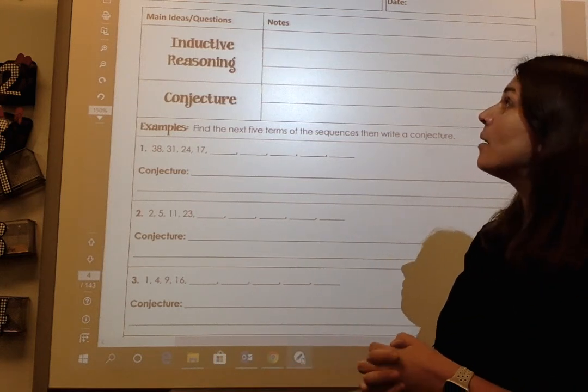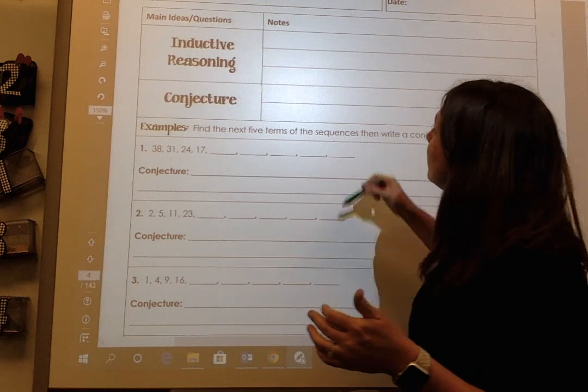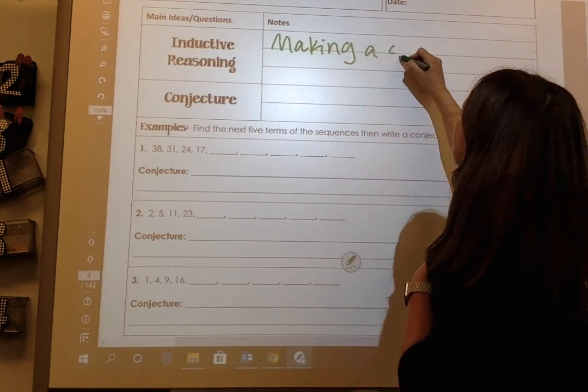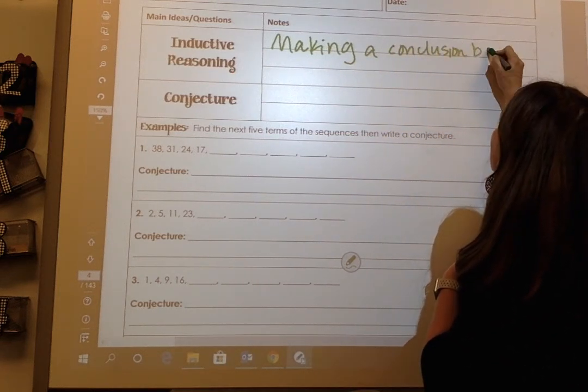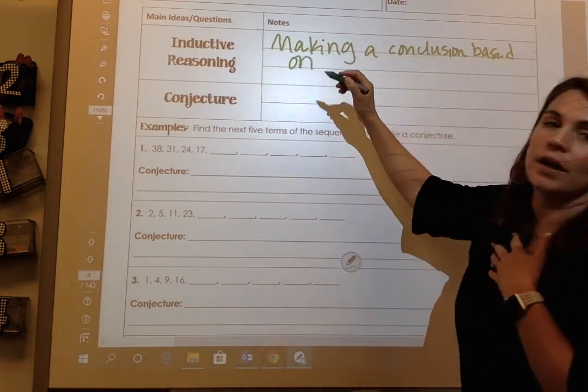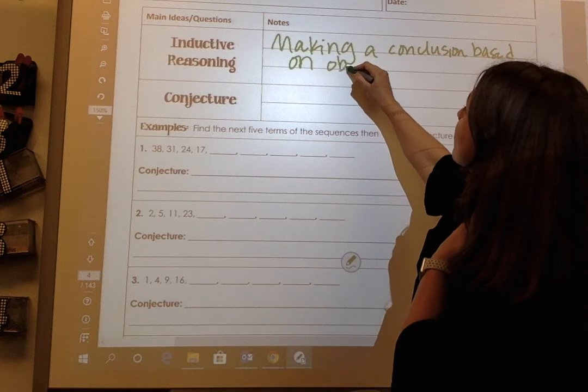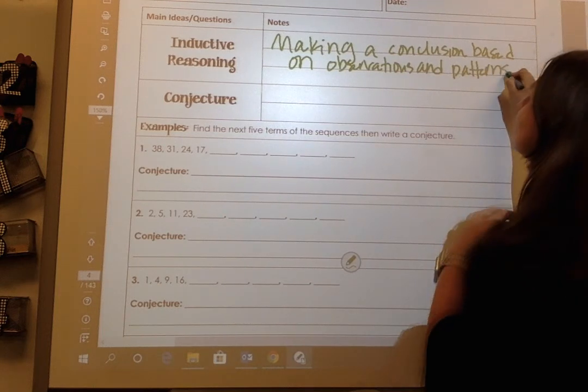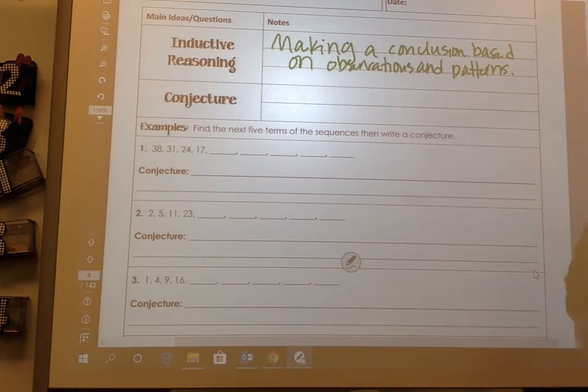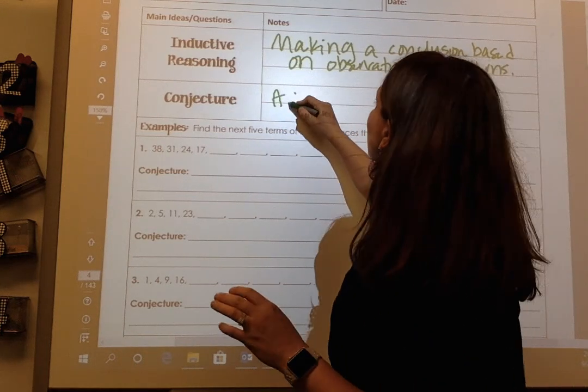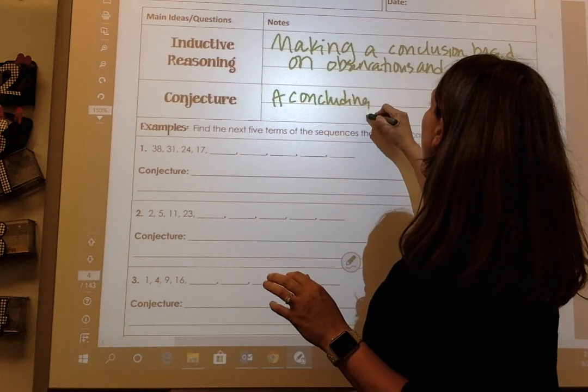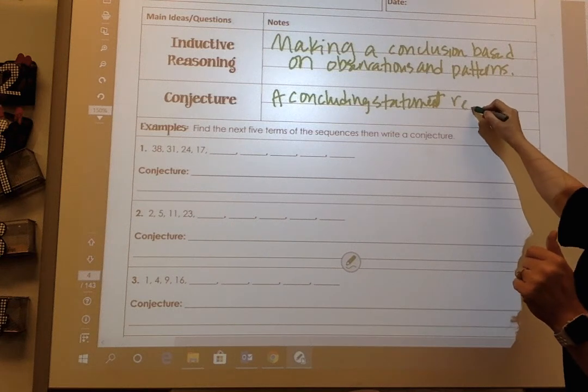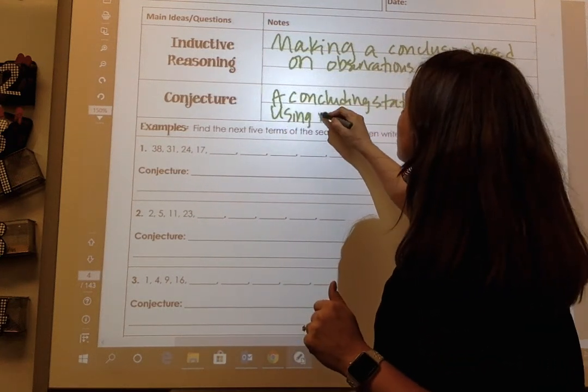Inductive reasoning is making a conclusion based on observations and patterns. A conjecture is a concluding statement reached using inductive reasoning.